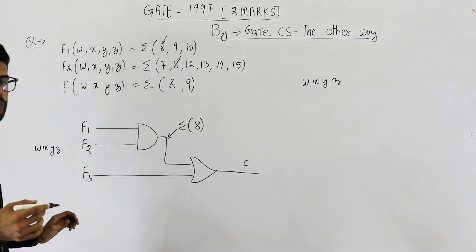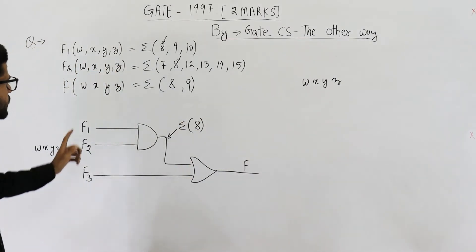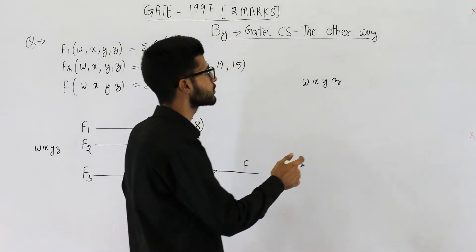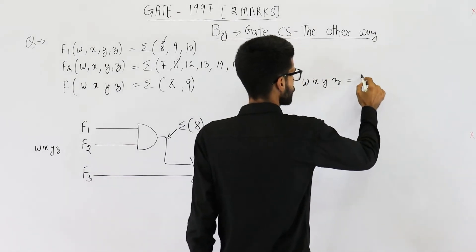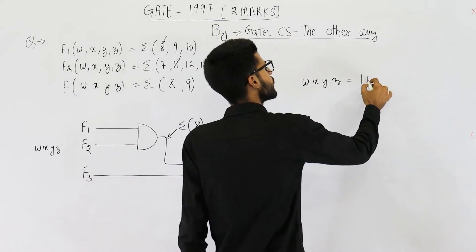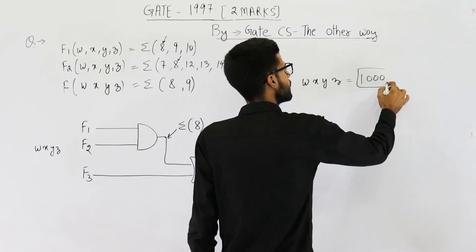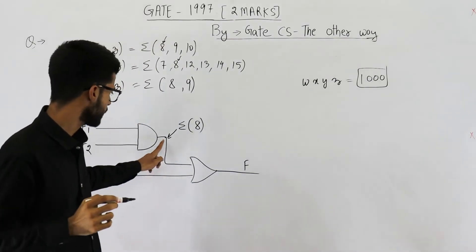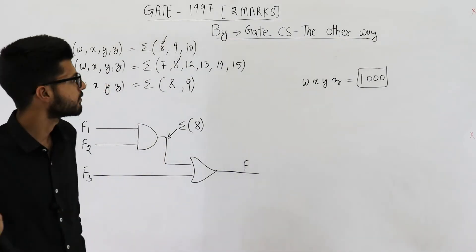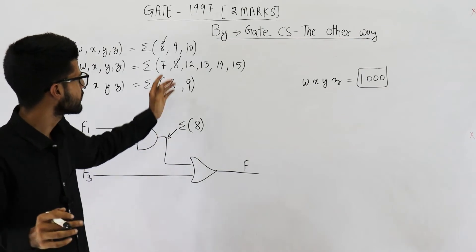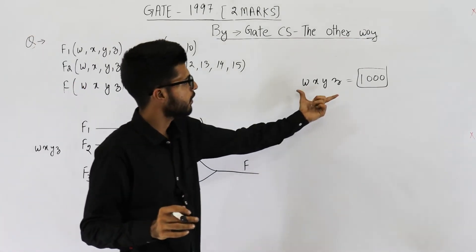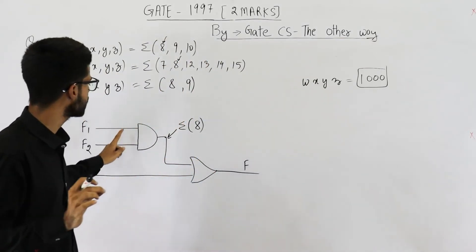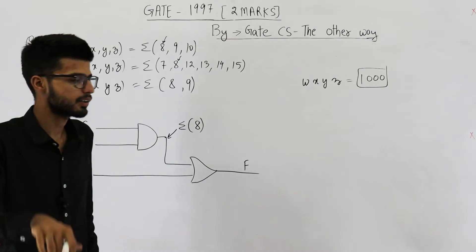What do I mean by saying only at 8? That means whenever the values of W, X, Y, Z are such that the input string becomes 8 — that is, W is 1 and X, Y, Z are all zeros, so the input is 1, 0, 0, 0 — in that case you'll get a 1 here. For every other value you'll get a 0, because no other value exists such that both F1 and F2 give high at the same time.